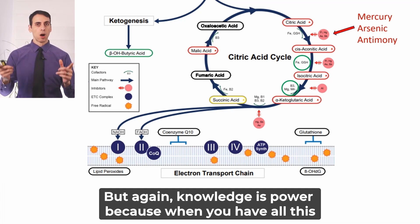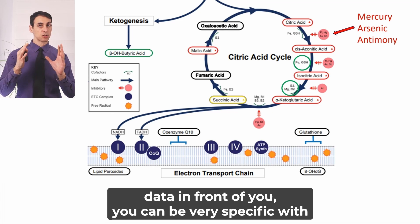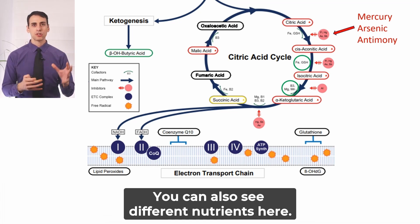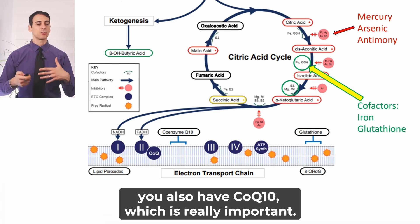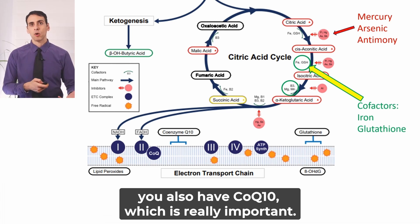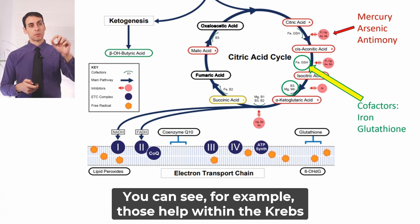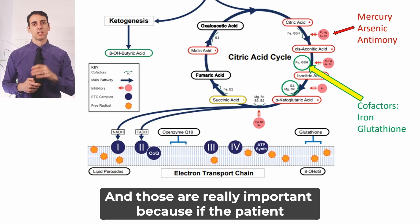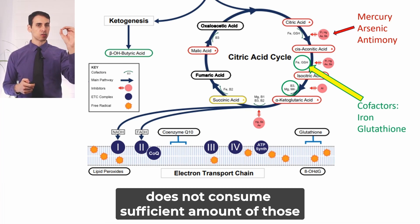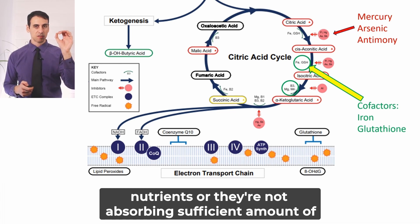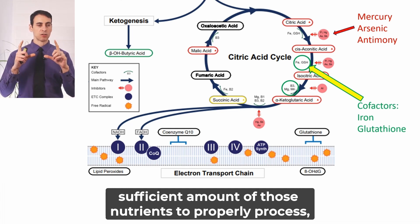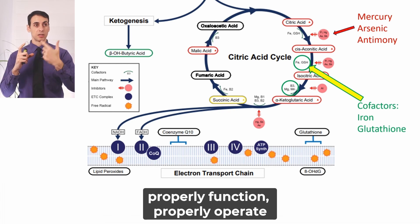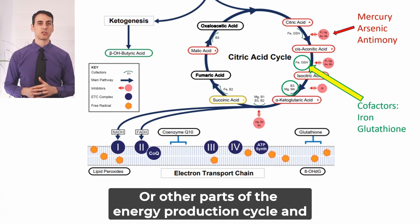Knowledge is power — when you have all this data in front of you, you can be very specific with your treatment strategies. Cofactors visible in the lab include iron, glutathione, and CoQ10, which are important within the Krebs cycle and other processes. If a patient does not consume or absorb sufficient amounts of those nutrients — or has a gut or metabolic problem — they may not properly operate the Krebs cycle or other parts of the energy production cycle, leading to poor energy molecule production.